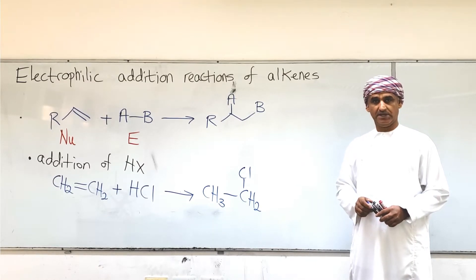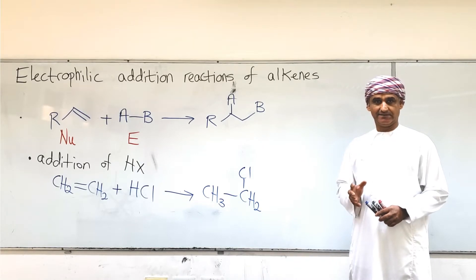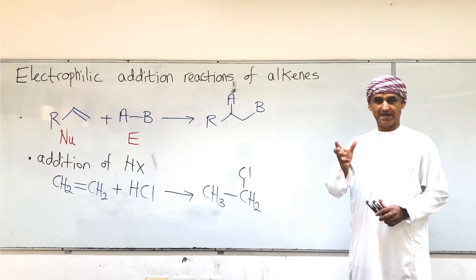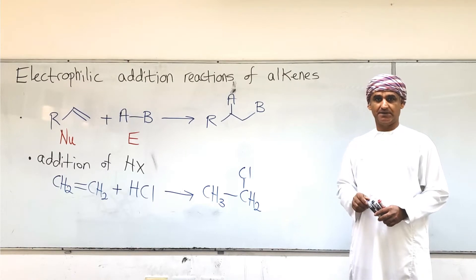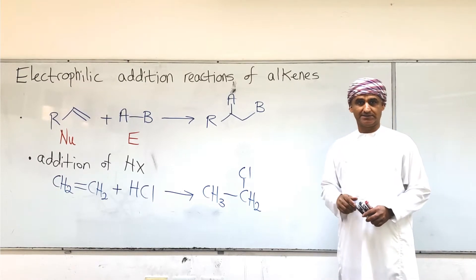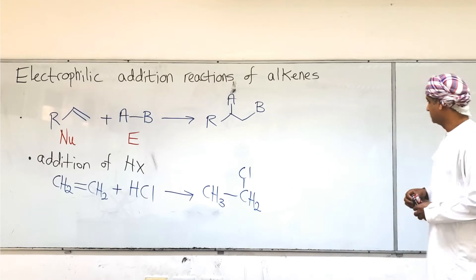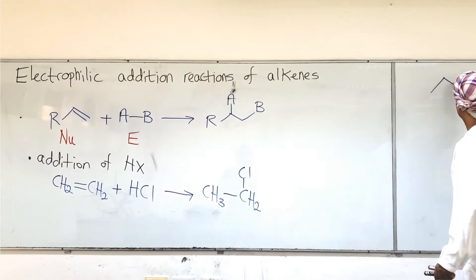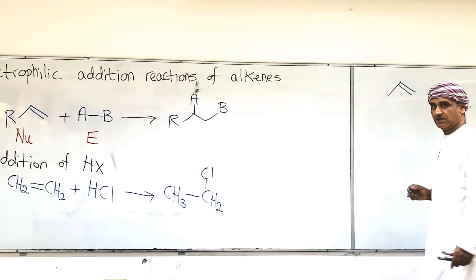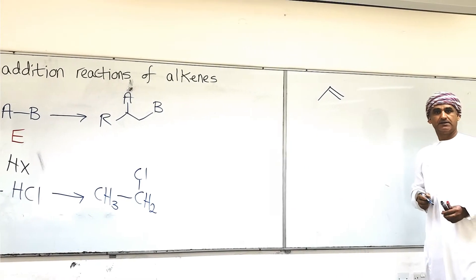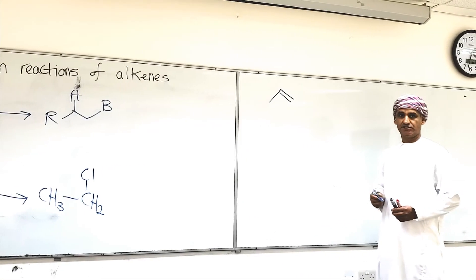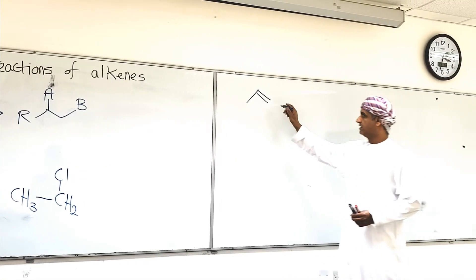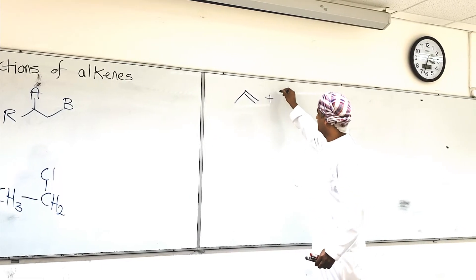What if we take an alkene with different numbers of hydrogen atoms on the carbons of the carbon-carbon double bond? Like propene, for example. Let's take propene, represented by skeletal representation, and add HCl to it.